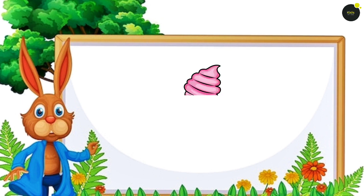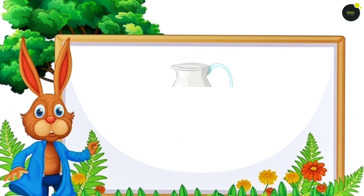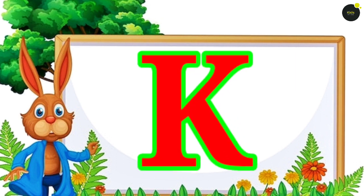I for Ice Cream. Ice Cream means Ice Cream. A for Jug. J for Jug. Jug means Jug.